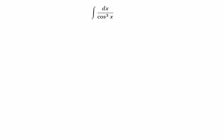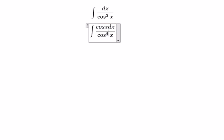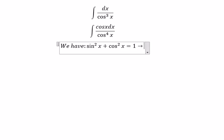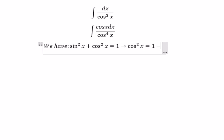Hello everybody. Today I will talk about calculus — the topic is about the integral. I will show you the technique to answer the question. We need to multiply with cosine x on the numerator and denominator. We have sine x squared plus cosine x squared equals 1, so cosine x squared equals 1 minus sine x squared.